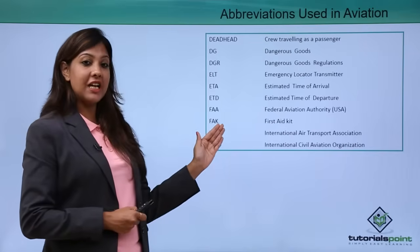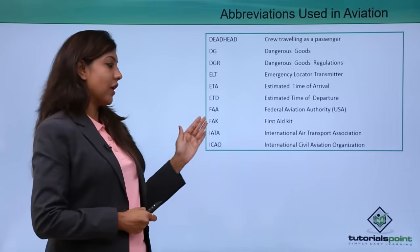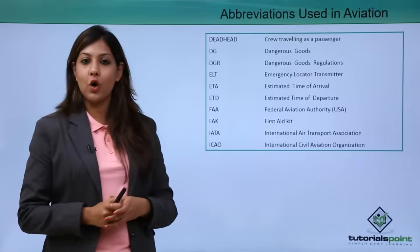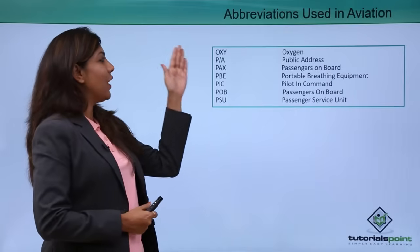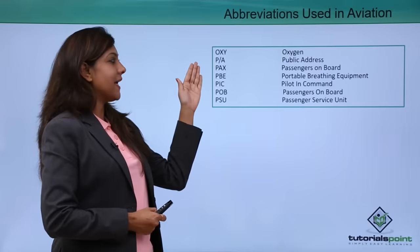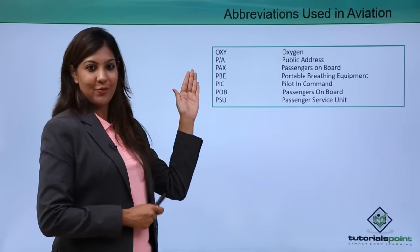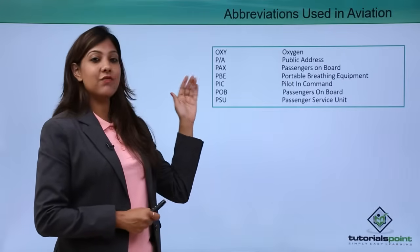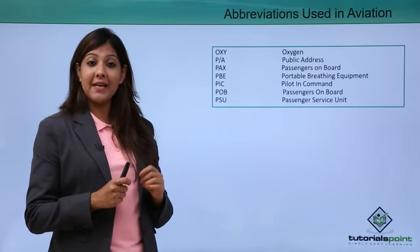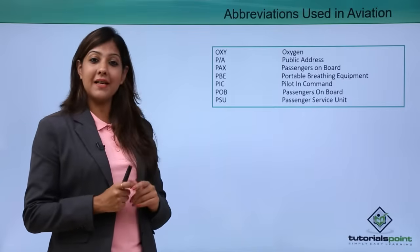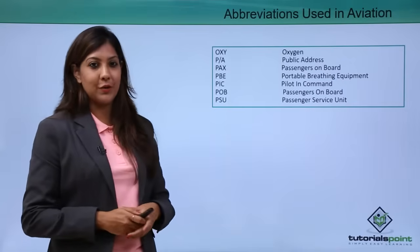IATA stands for international air transport association and ICAO stands for international civil aviation organization. We have some more terminologies: OXY stands for oxygen. PA stands for public address. PAX stands for passengers on board. PBE stands for portable breathing equipment. PIC stands for pilot in command. POB stands for passengers on board. PSU stands for passenger service unit.